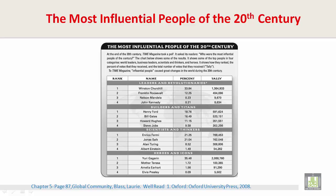The chart shows how they ranked, the percent of votes that they received, and the total number of votes they received, which is also called tally. To Time Magazine, influential people caused great changes in the world during the twentieth century. The four categories are: Leaders and Revolutionaries, Builders and Titans, Scientists and Thinkers, and Heroes and Icons.